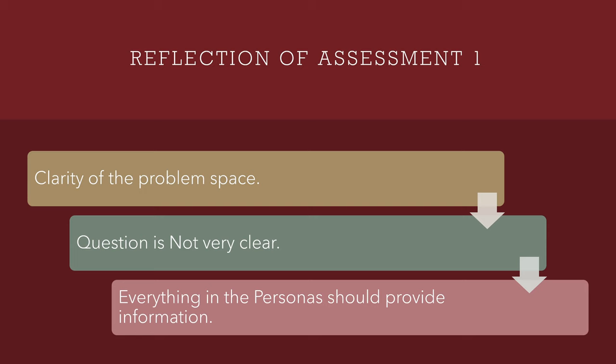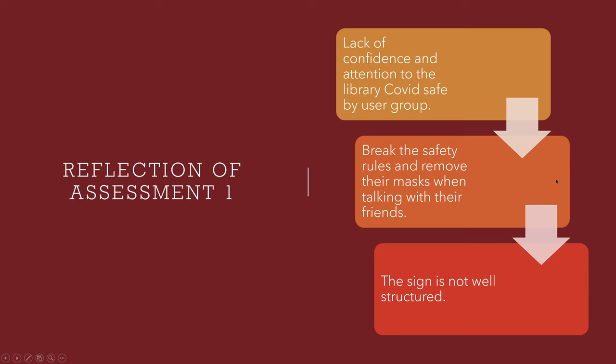As part of the user study, students will study with their peers or complete group tasks after entering the library. They are likely to break the safety rules and remove their masks when talking with their friends, which can be a problem for other users. Also, because the library is not built-in, it is difficult for users to find a proper seat in a short time, and they have to walk a long way in the library to find a seat within the crowd.